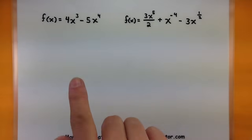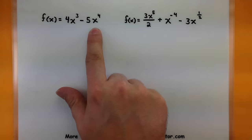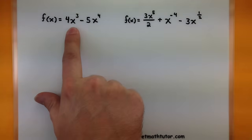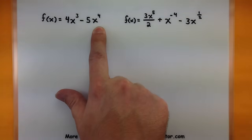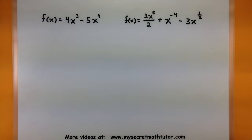In this one you'll notice that I have 4x cubed minus 5x to the fourth. I'm going to apply that power rule to the x cubed and to the x to the fourth. I can do this because they're being connected by plus or minus.